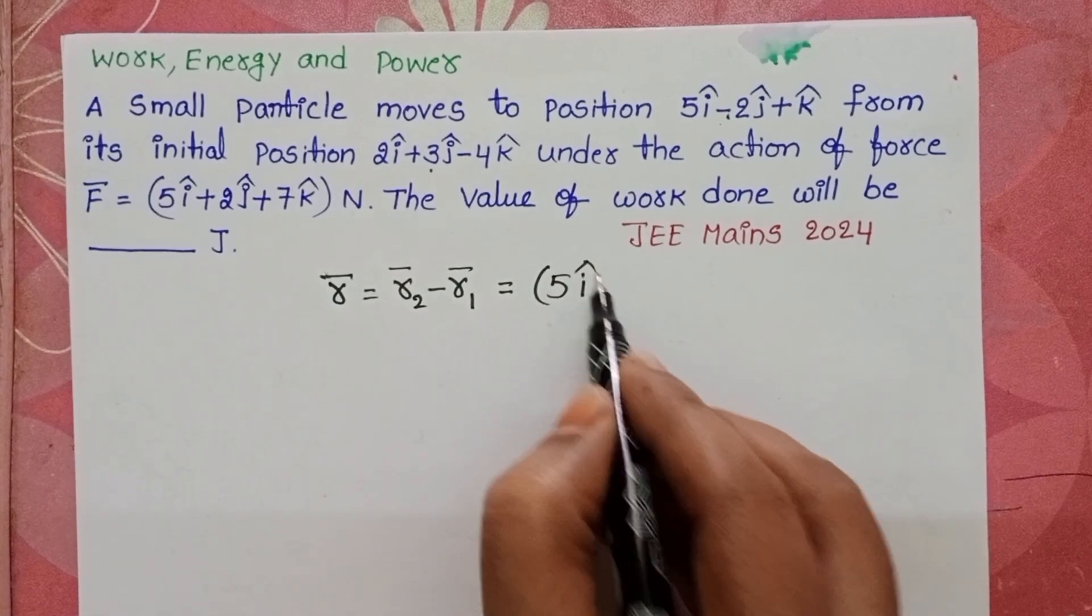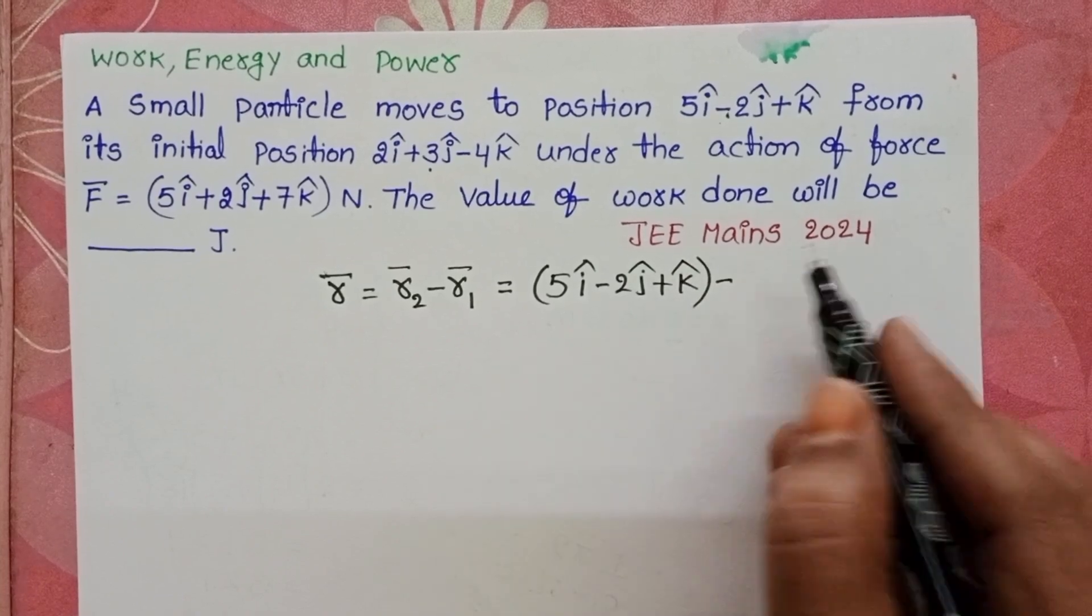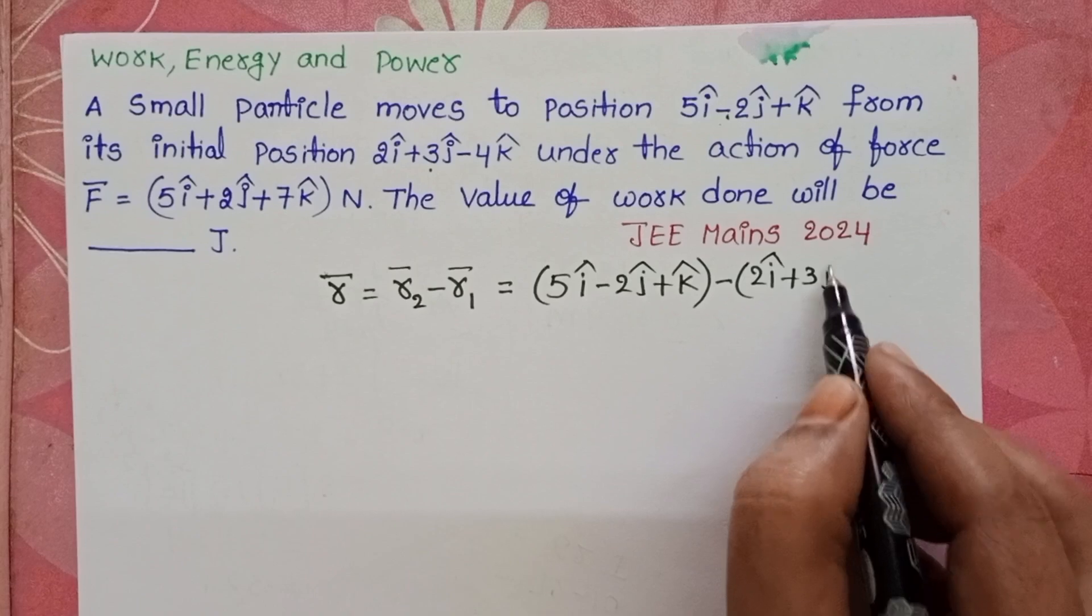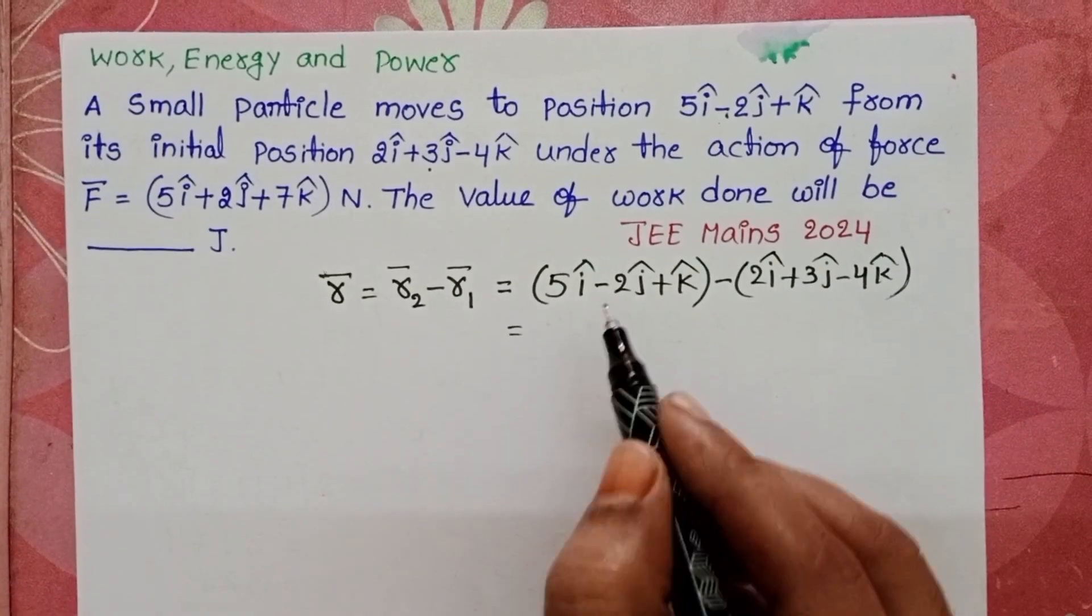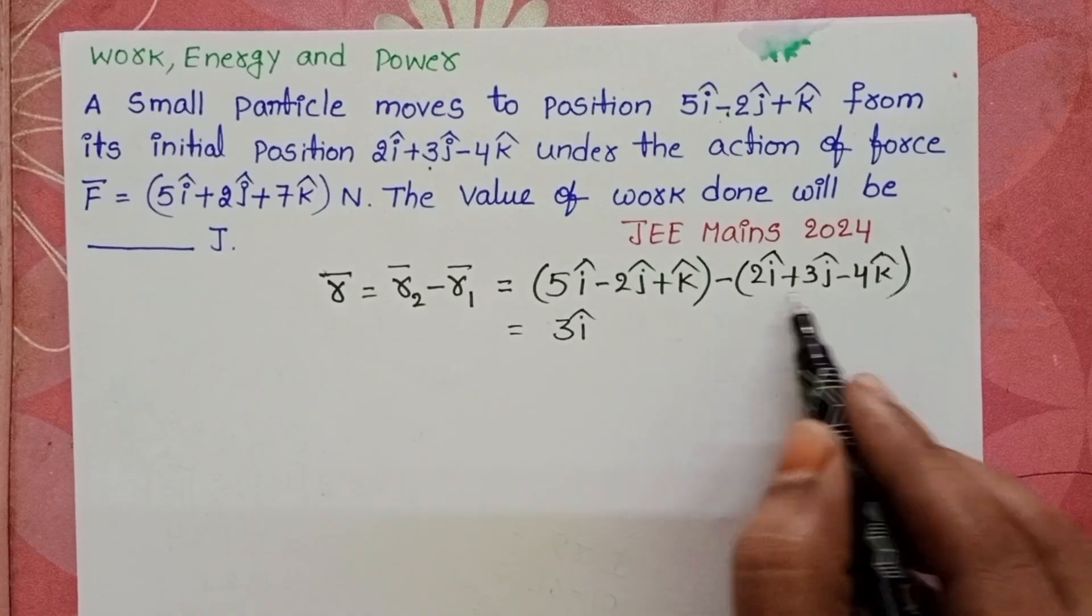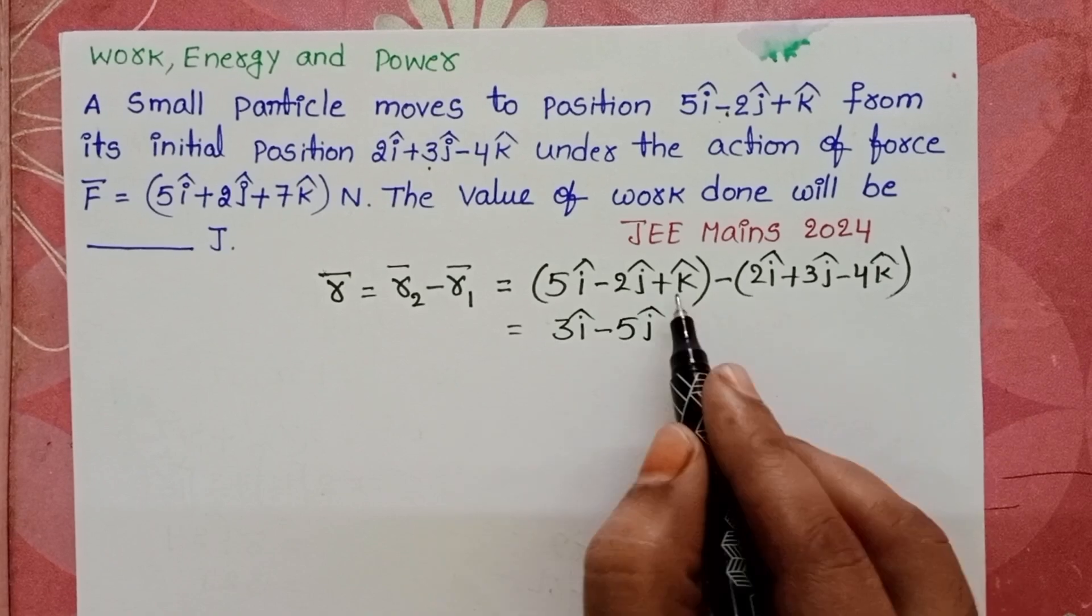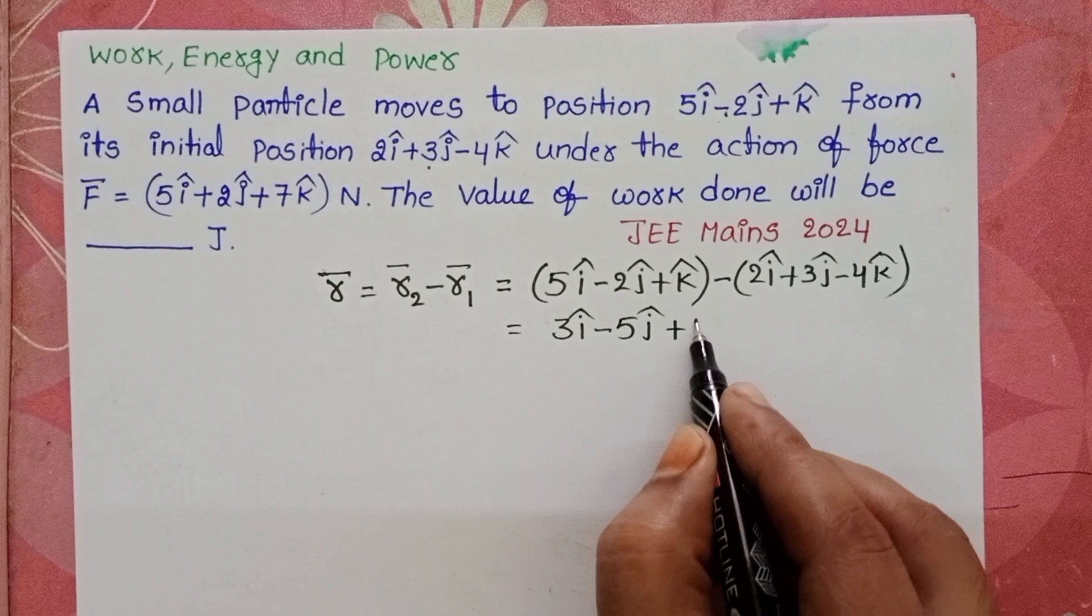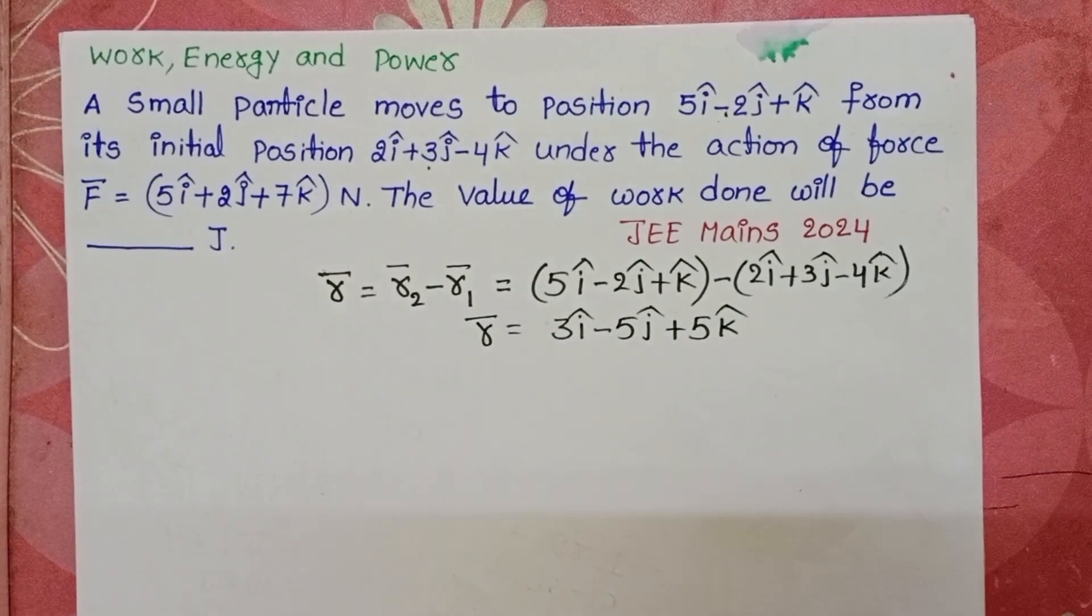5i cap minus 2j cap plus k cap minus 2i cap plus 3j cap minus 4k cap. 5 minus 2 is 3i cap. Here minus 2 minus 3 is minus 5j cap. Plus k cap. Here minus of minus 4k cap, it becomes 5k cap. This is the position of the particle.